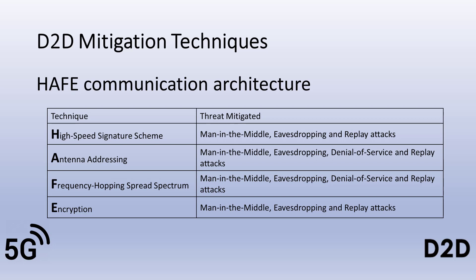Frequency hopping spread spectrum is a technology that rapidly changes the frequency the carrier uses to transmit data. This technology has been used extensively in wireless communications and is a mature and trusted technology. The increase in frequency range of 5G into the millimeter wave spectrum will allow for more frequency possibilities, increasing the effectiveness of this technology. The 2FISH symmetric key encryption cipher will be used to encrypt data between the two devices. 2FISH has been shown to be a strong cipher, is a well-known and mature technology, and is regarded as one of the fastest encryption ciphers. It is free to use and can be used in both hardware and software.